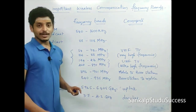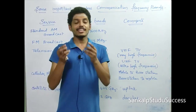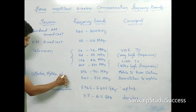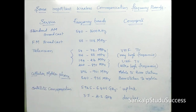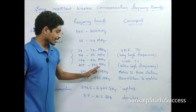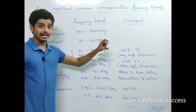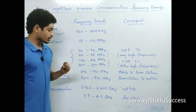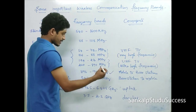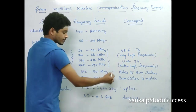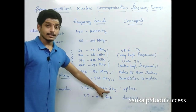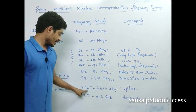Television uses very high frequency (VHF) and ultra high frequency (UHF) bands in the MHz range. Cellular mobile phones — also called cell phones — operate in specific frequency bands. The base station for cellular mobile operates in the 840 to 935 MHz frequency band.